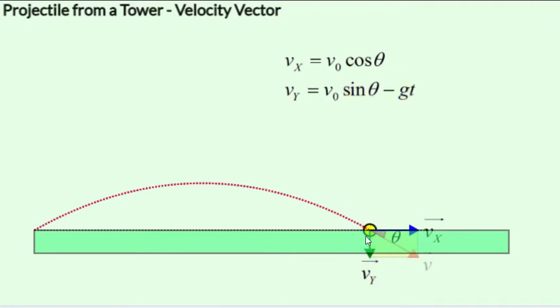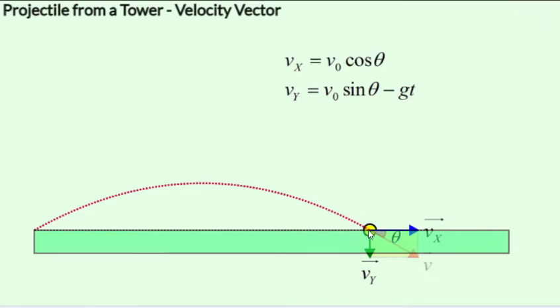Also, the vector addition of vx and vy everywhere along the path would give us the resultant vector v. We have also seen that the magnitude of the velocity of the projectile when it lands is equal to the magnitude of the velocity when it is launched, provided that the launch and landing points are on the same horizontal surface.